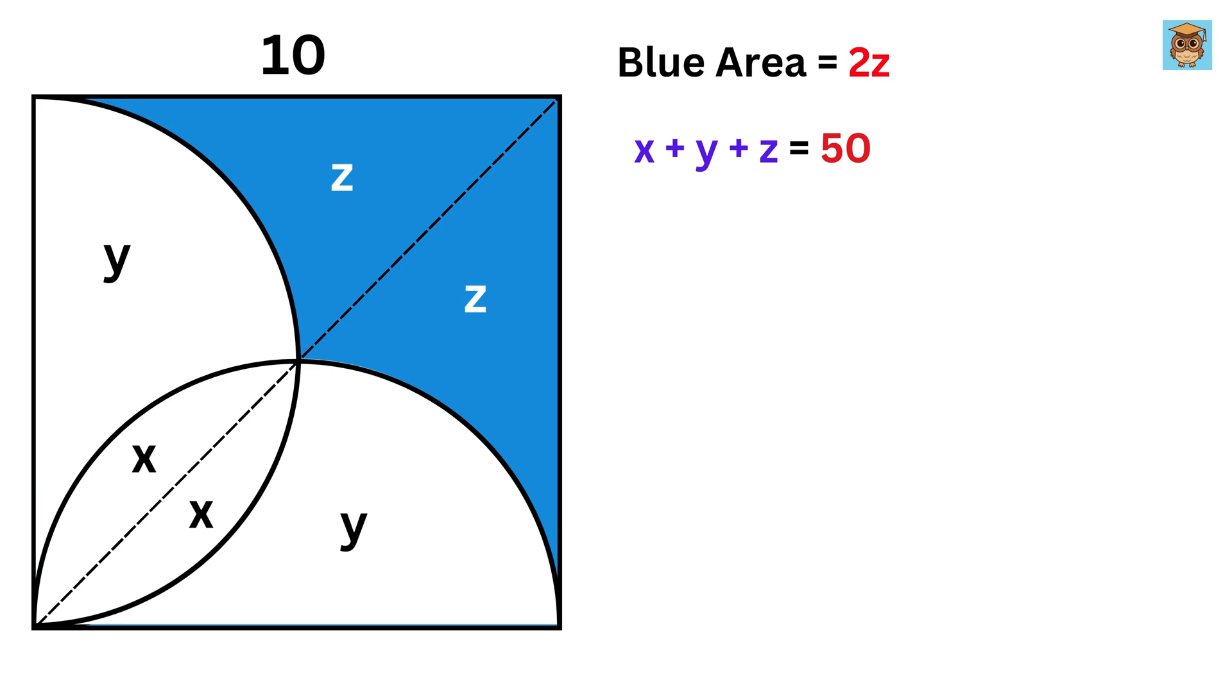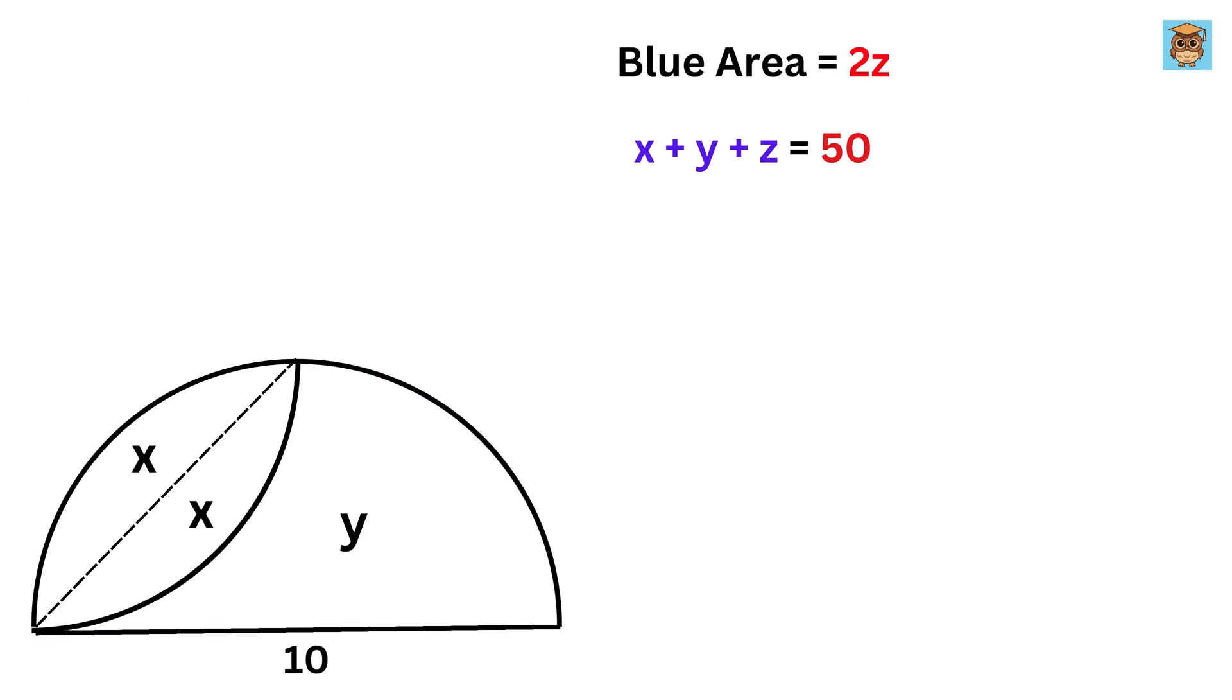Next, we have a semicircle inside the square. The area of a semicircle is given by pi times radius squared, divided by 2. The diameter of this semicircle is 10, so the radius is 5.